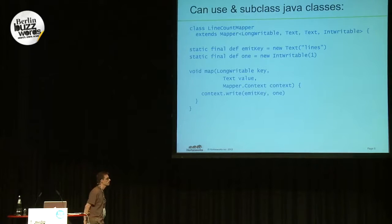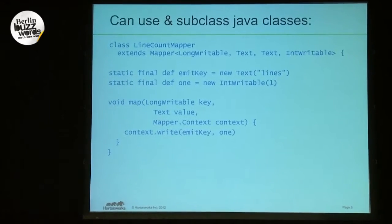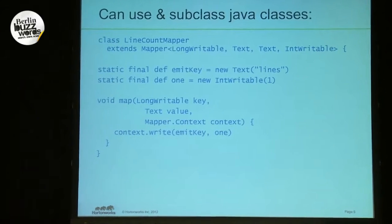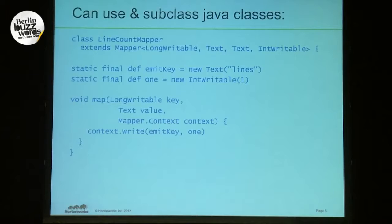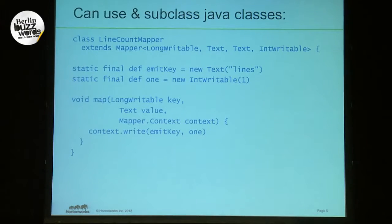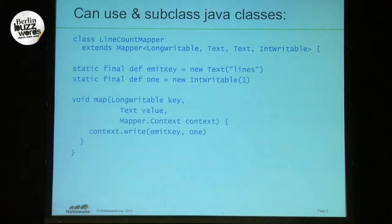Groovy also integrates really well. In particular, you can subclass Java classes, and Java classes can subclass Groovy. So here is a mapper that runs inside Hadoop. I'm going to extend the normal Java mapper class, and my map operation just does what you do. It looks almost like a normal mapper, except I'm using the keyword 'def' rather than defining what my data types are and letting Groovy work it out for itself. Nothing exciting there.